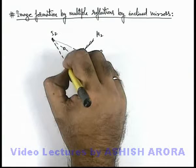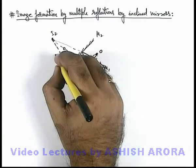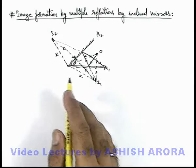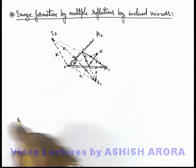And we can see by symmetry all these successive images formed are located at a distance x from the point of intersection of the mirrors.